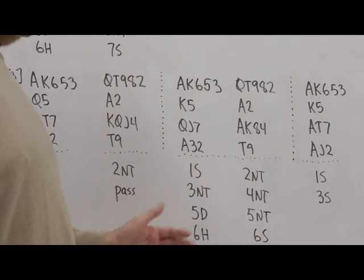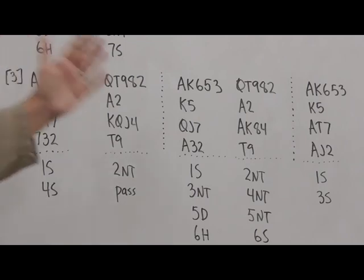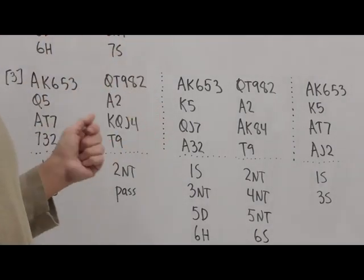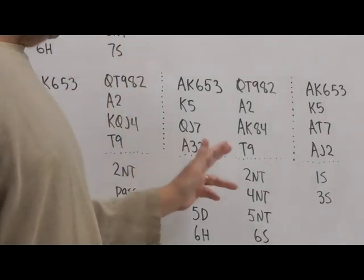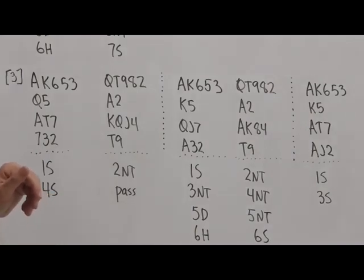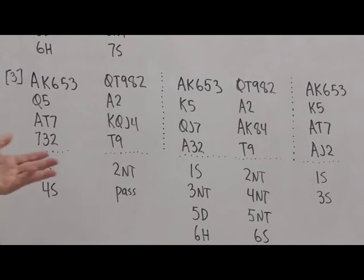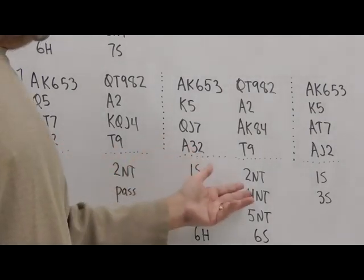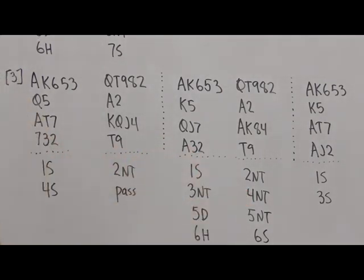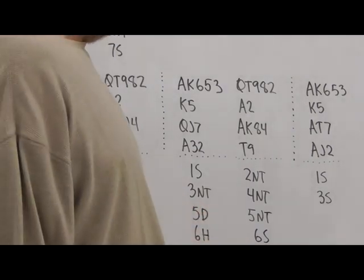Okay, now in this second one here, we're going to be looking at a hand where opener has an intermediate strength one level opener. Bids one spade. Responder makes a Jacoby-two no trump call. Opener shows this intermediate strength range of 16 to 18 roughly, with a three no trump call. Responder bids four no trump, and they're on the way to slam. Making a 5-6 spades finally.